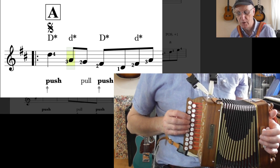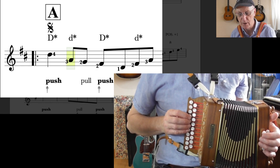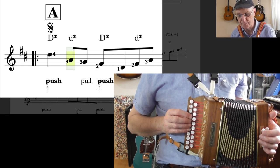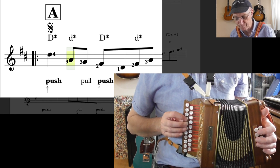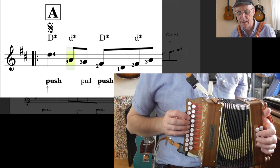We count it one, two and three and four and. Because it's a crotchet, two quavers and then four more quavers. One, two and three and four and.